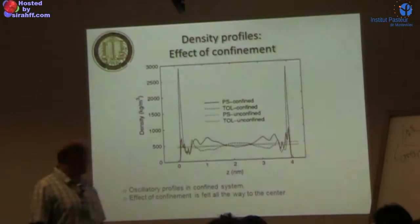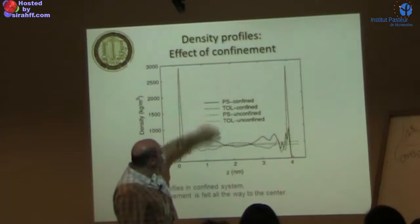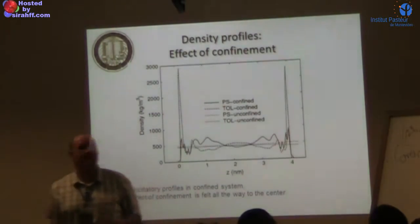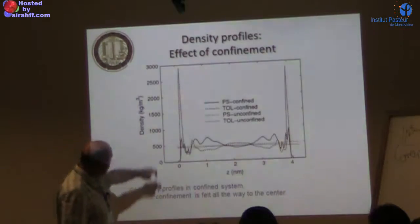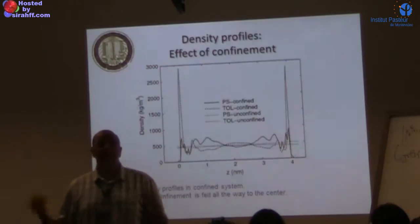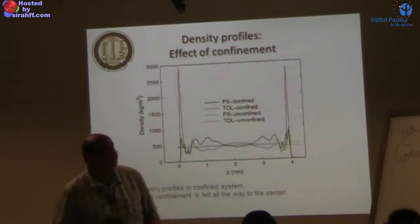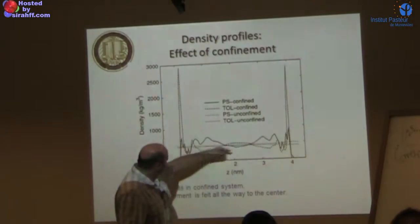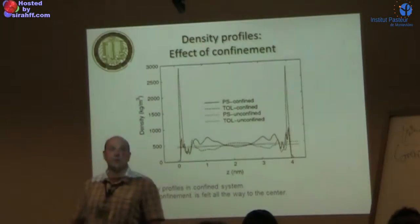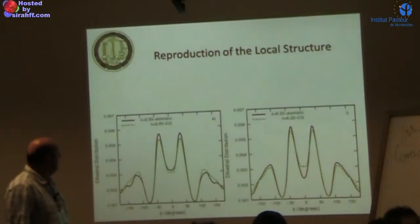These are density profiles for polystyrene and toluene confined in the pore. There is some adsorption of toluene at the surface, which is clear, but only weak adsorption of polystyrene to the graphene surface — so the surface is more or less neutral toward the polymer. Still, the density profile in the 4.5 nm system is not flat across the pore; the confinement effects are felt all the way through to the middle.